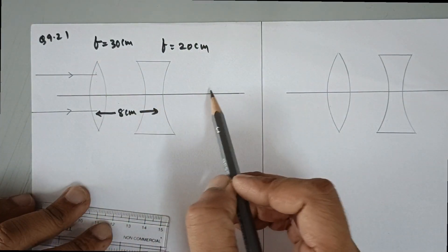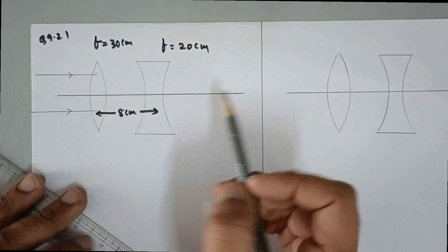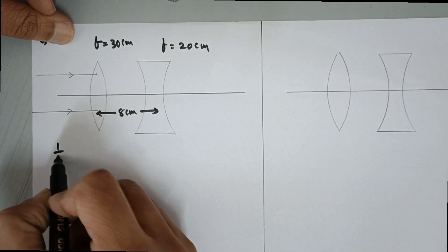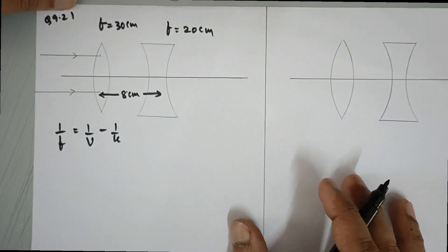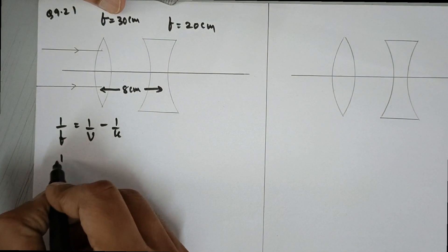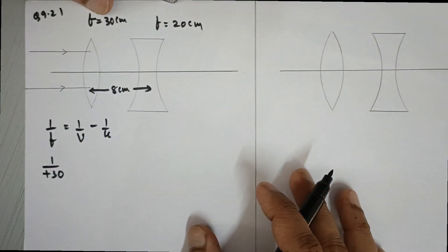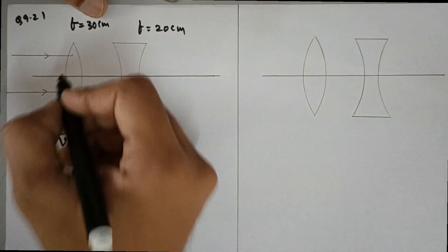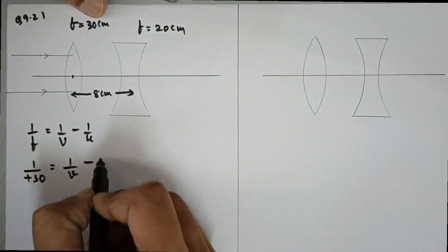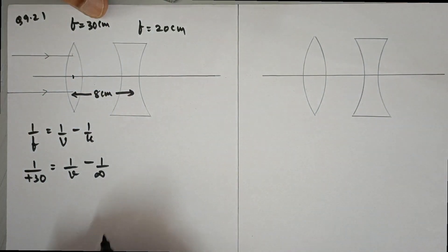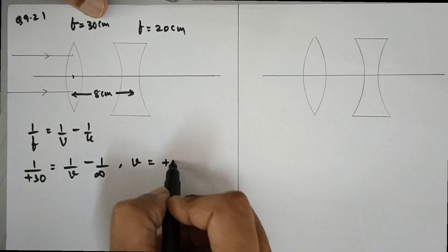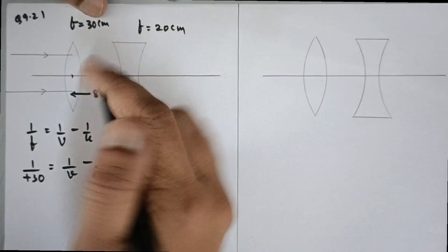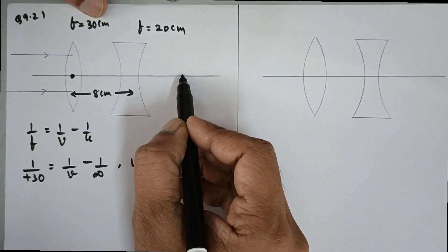The rays are going to converge at the focus of the convex lens. Applying the lens equation 1/f = 1/v − 1/u — sign conventions are very important — the focal length of the convex lens is +30 because rays converge on the other side of the optical center. With u at infinity, v = +30 cm, so the image is 30 cm from the optical center on the right side.